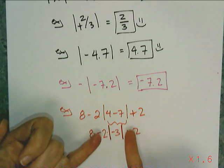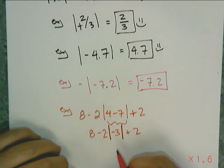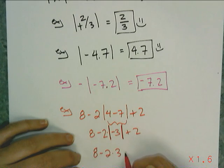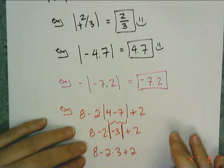Now, I'm not done yet though, I still have to take the absolute value of negative 3, which is just 3. So I have 8 minus 2 times 3 plus 2, follow the order of operations.